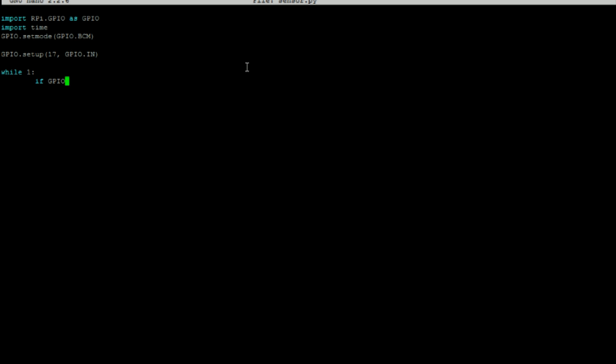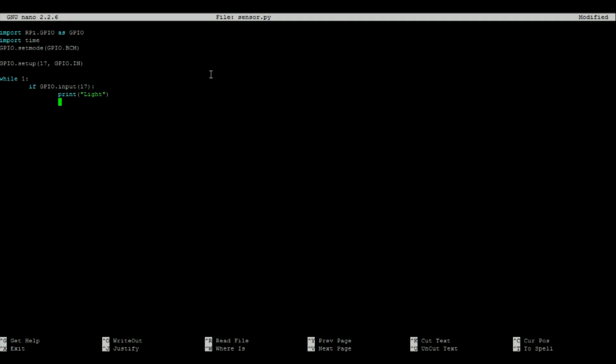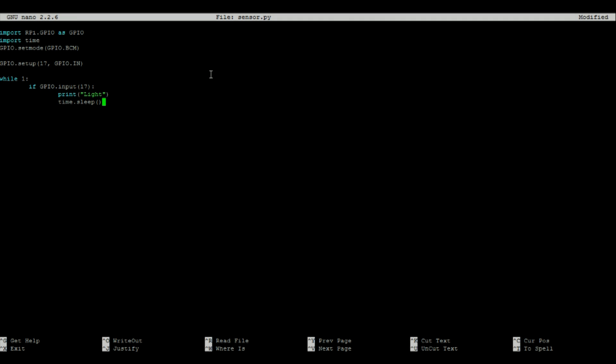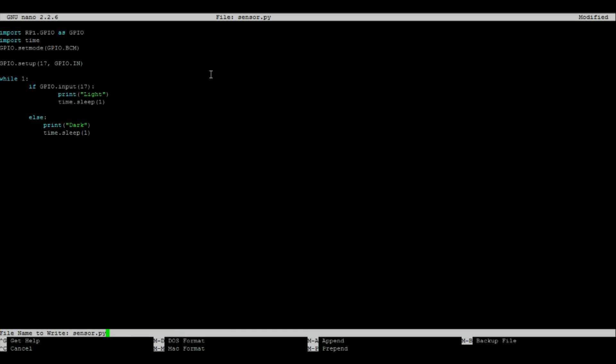Then add the following statement: If the GPIO pin input 17 is high, then we'll print the word light to the console, and then we'll give that a delay of one second to prevent the console from being flooded with these posts. And if GPIO pin 17 isn't high, then we'll print the word dark to the console and give that a delay of one second. Then save and exit out of that file.